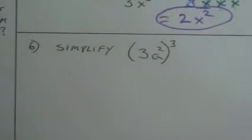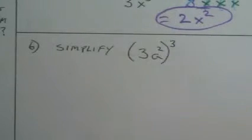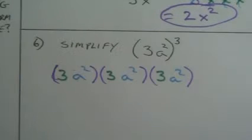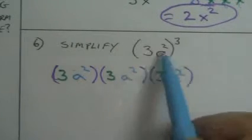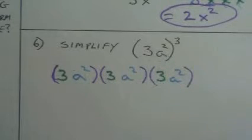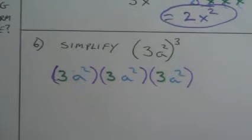Number six. Simplify. So another expression. So basically, we have three a squared three times. So if I wrote that out, this is what I'd have. I'd have three a squared multiplied three times.